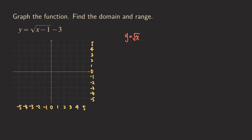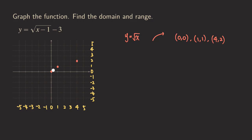So how do we graph this one? The three key points — you can see the general shape is going to be this way. The three key points would be (0, 0), then (1, 1), and then (4, 2). So let's graph those three key points right there. And then the general shape for the function — this is our y equals square root of x.